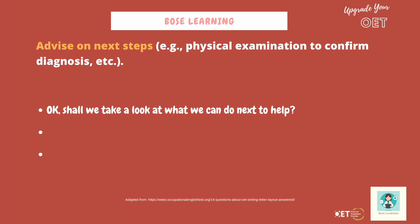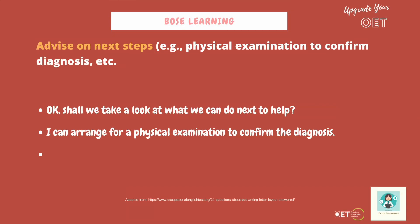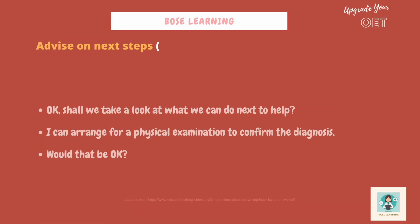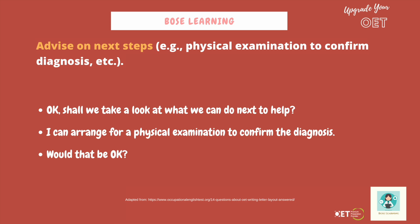In this case you might want to say something like: 'Shall we take a look at what we can do next to help? I can arrange for a physical examination to confirm the diagnosis. Would that be okay?' Don't stress if the task card asks you for a physical examination — of course you don't need to do this in the OET. They're not checking your clinical skills, just your English skills. So just say something to address it: 'I can arrange for a physical examination to confirm the diagnosis — would that be okay?' Or you could say, 'A physical examination to check what we think has happened is actually what's happened.' Always check with the patient if that's okay, and don't forget to signpost — tell them you're moving on to a physical examination.